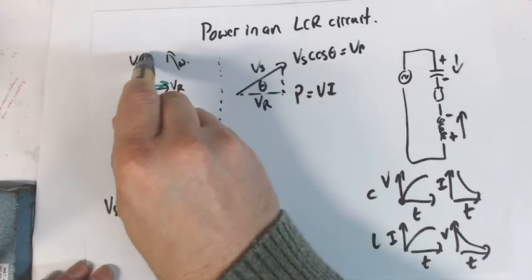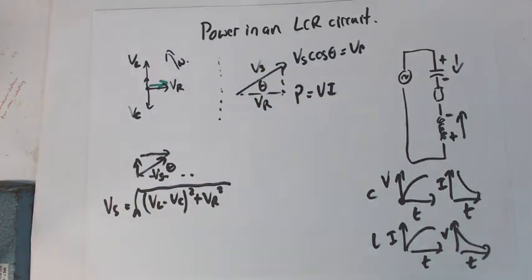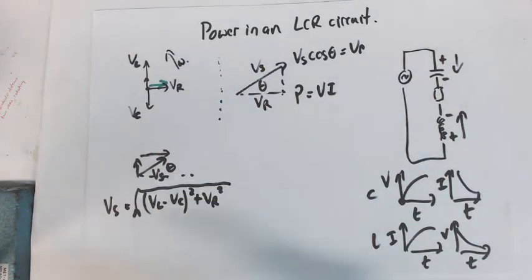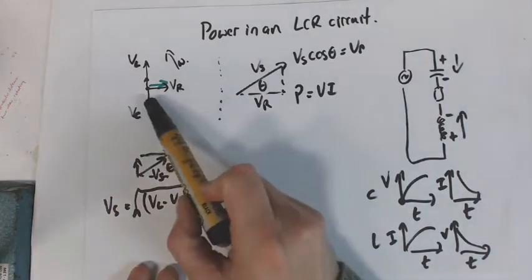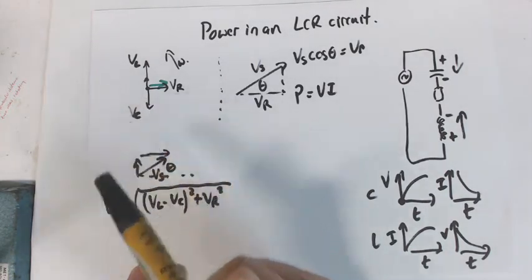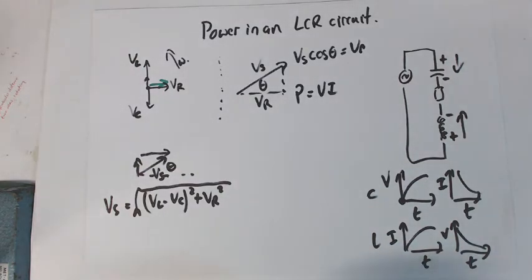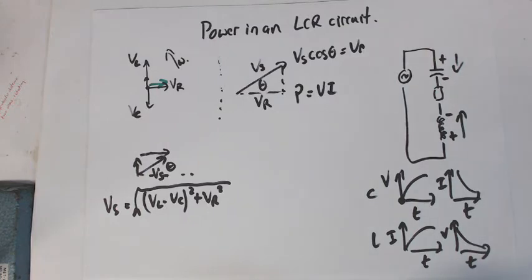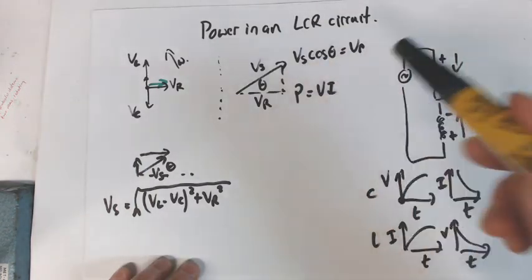Now the energy in the inductor, and there is energy in the inductor and we're going to show another little video the way this all works, and there is energy in the capacitor at different times. Now the energy in the capacitor is at its most when the voltage is at its most, and the energy in the inductor is at its most when the current's at its most. So we'll look at that like I said. But the voltage in the resistor times the current will be the power being used. So that's Vs cos theta equals Vr times the current.